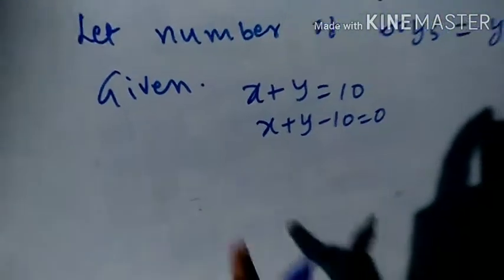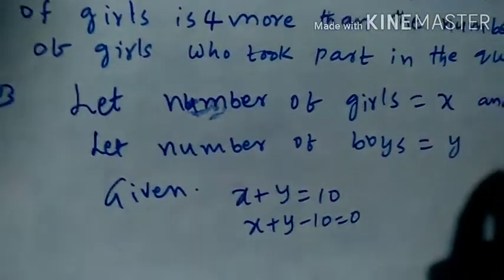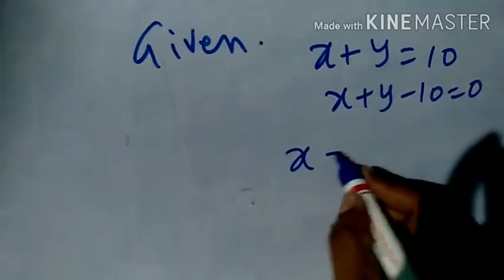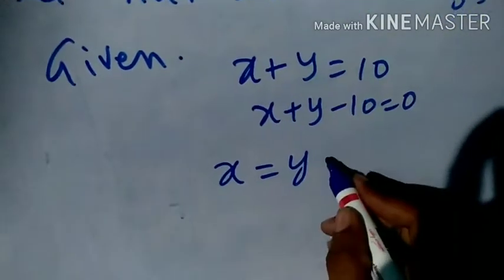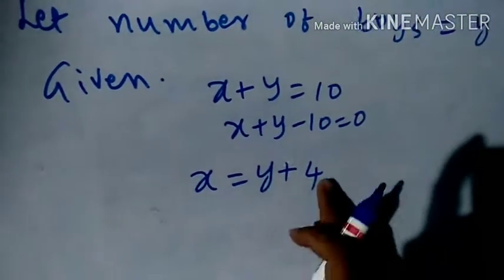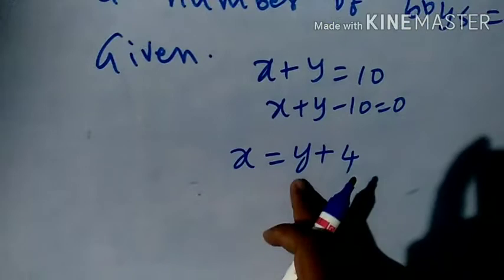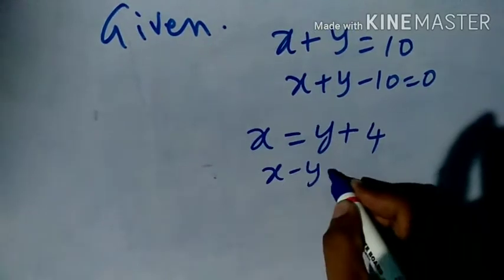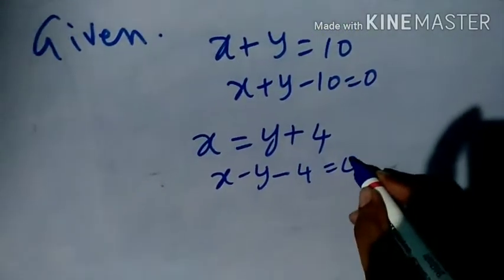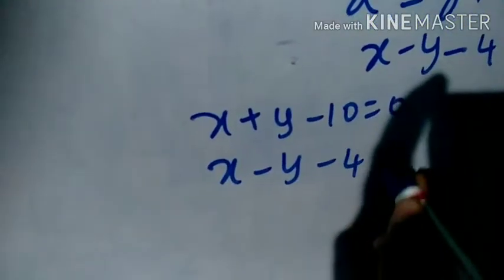Next, the number of girls is 4 more than the number of boys, so number of girls equals number of boys plus 4. Transposing all terms to the LHS: x minus y minus 4 is equal to 0. So the pair of linear equations are: x plus y minus 10 equals 0, and x minus y minus 4 equals 0.